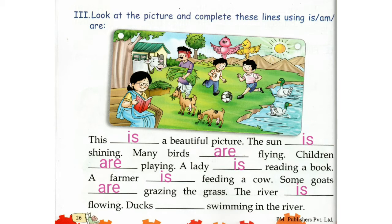Ducks. How many ducks do you see in the river? One, two — we have two ducks. So we will use Are. Ducks are swimming in the river.